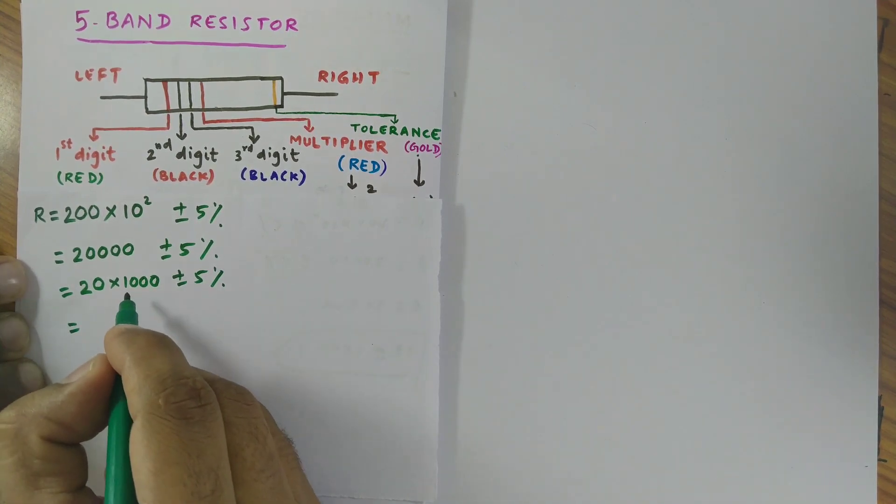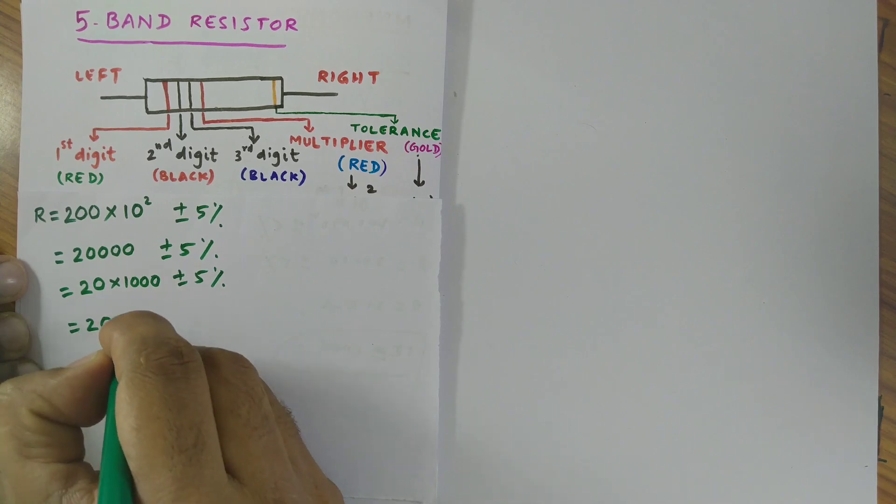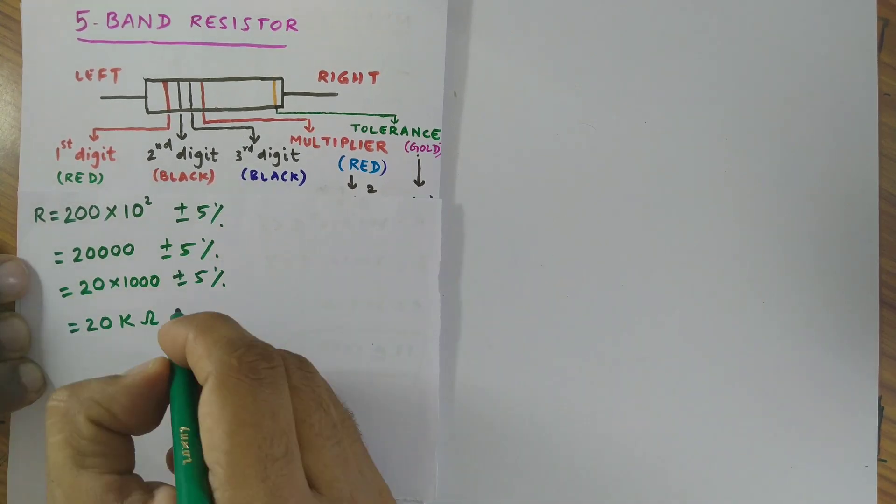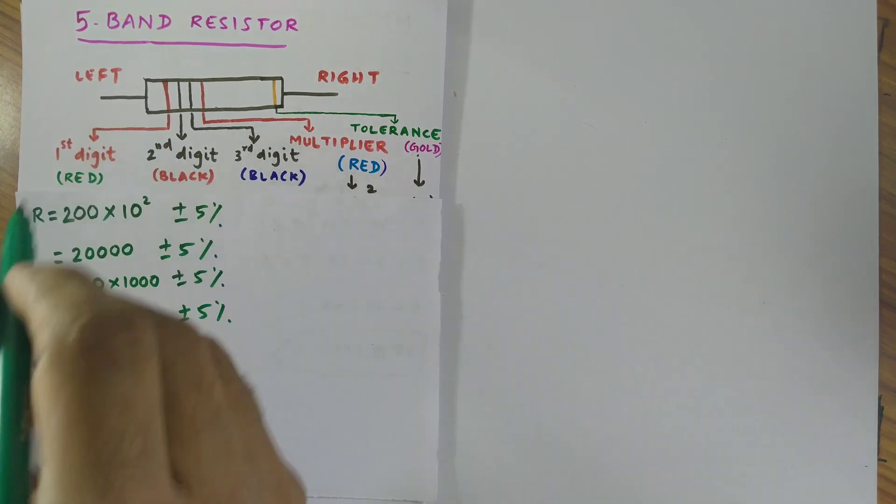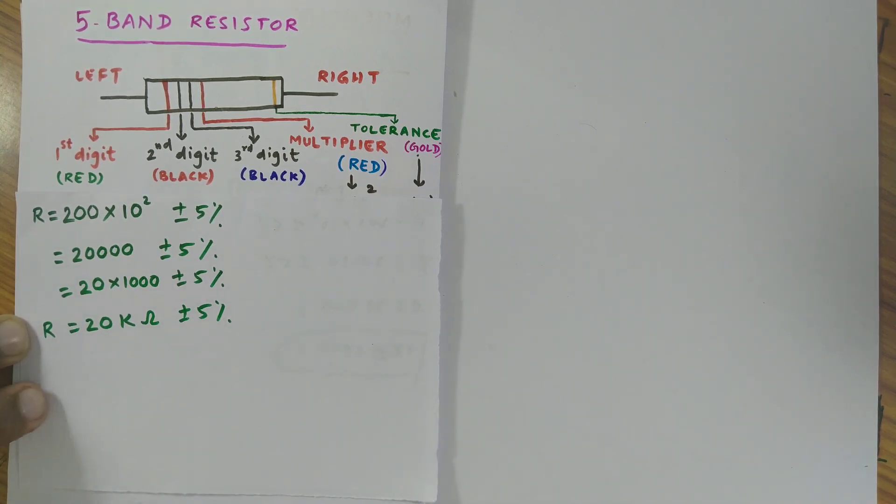We know 1000 means kilo so I write 20 kilo ohm which is the unit of resistance. Here I obtained the final value of this resistor which is 20 kilo ohm. Thanks for watching this video.